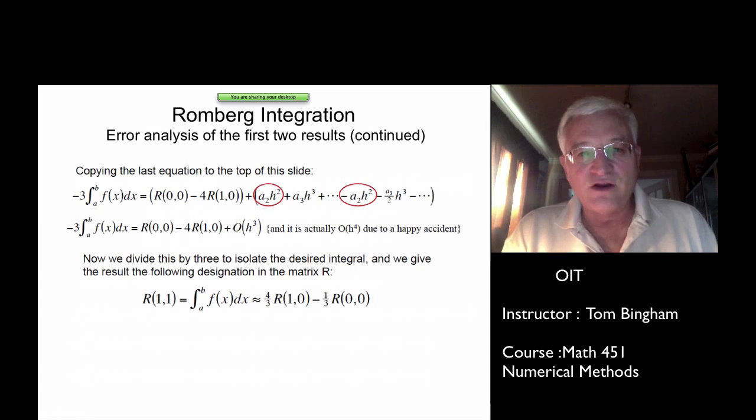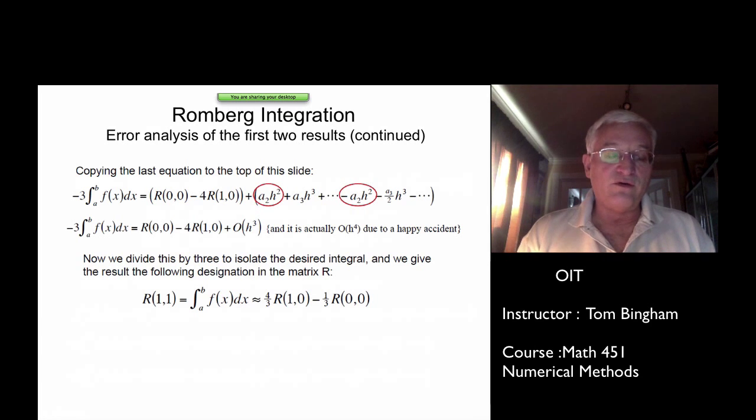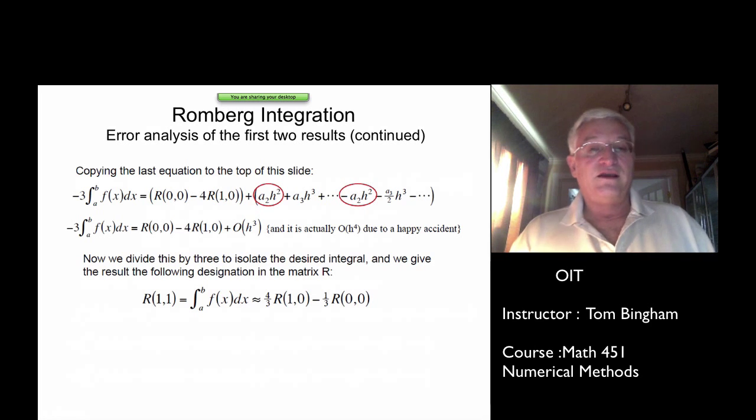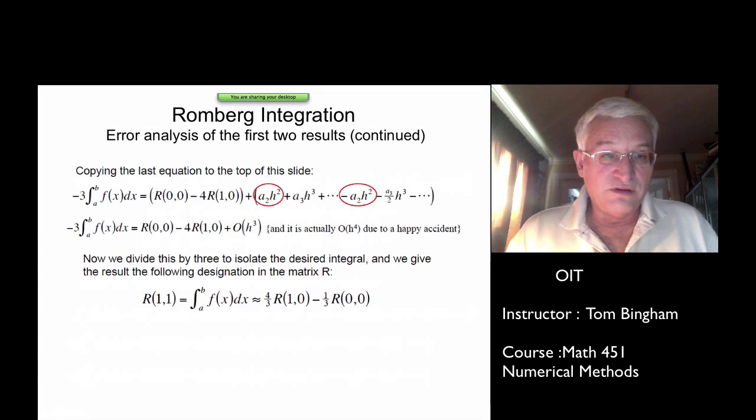Now I've got a little side note on there that that turns out to be order of h to the 4th, and it's a happy accident. One of the reasons why Simpson's rule did so much better than the trapezoid rule is we got lucky, and when we aimed at trying to get rid of the h squared term, the h cubed term went with it. It turns out if I tested it on the cube, if I tried it on x cubed, it would give you an exact result on the integral of x cubed even though I didn't really ask it to. It wasn't part of the design, it just came out that way.